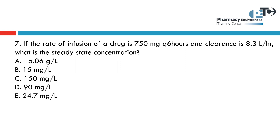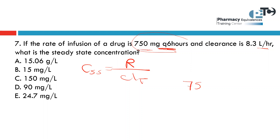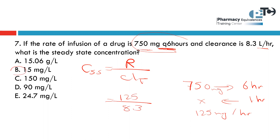If the rate of infusion of a drug is 750 mg every six hours, and the clearance rate is 8.3 liters per hour, what is the steady-state concentration? The formula is: CSS = R / total clearance. We cannot divide directly because R is given every six hours while clearance is per hour. So convert: 750 mg every six hours equals 125 mg per hour. Divide 125 by 8.3 to get 15 mg per liter.